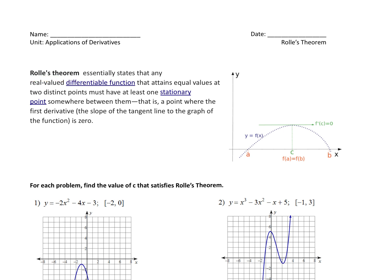Rolle's Theorem essentially states that any real-valued differentiable function that attains equal values at two distinct points must have at least one stationary point somewhere between them—that is, a point where the first derivative or the slope of the tangent line to that graph of the function is in fact zero.